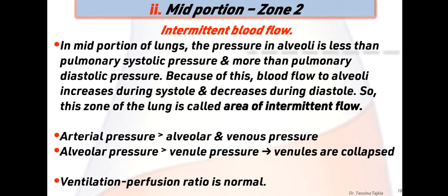Zone 2 is the mid portion, where intermittent blood flow occurs. In the mid portion of the lung, pressure in the alveoli is less than the pulmonary systolic pressure and more than the pulmonary diastolic pressure. Because of this, blood flow to alveoli increases during systole and decreases during diastole. So this zone is called the area of intermittent blood flow. Here, arterial pressure is more than alveolar pressure, and alveolar pressure is more than venous pressure, so venules are collapsed. The ventilation-perfusion ratio here is normal.